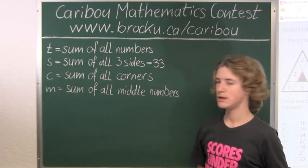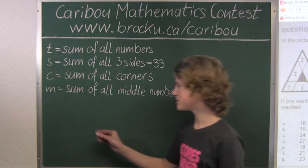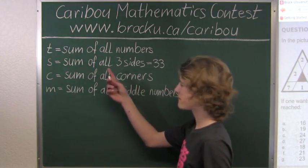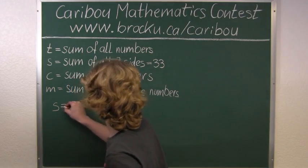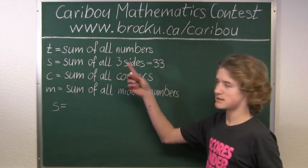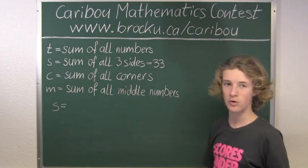So we already know one relation between these variables. We know s, which is the sum of all three sides, equals t, which is the sum of all numbers, plus c, which is the sum of all corners.